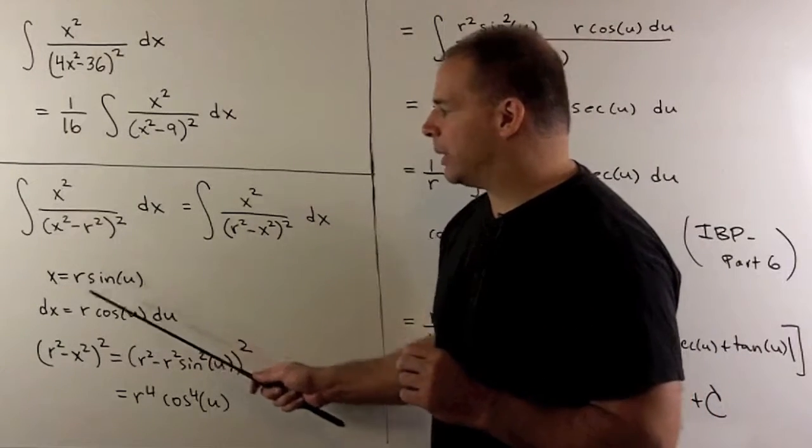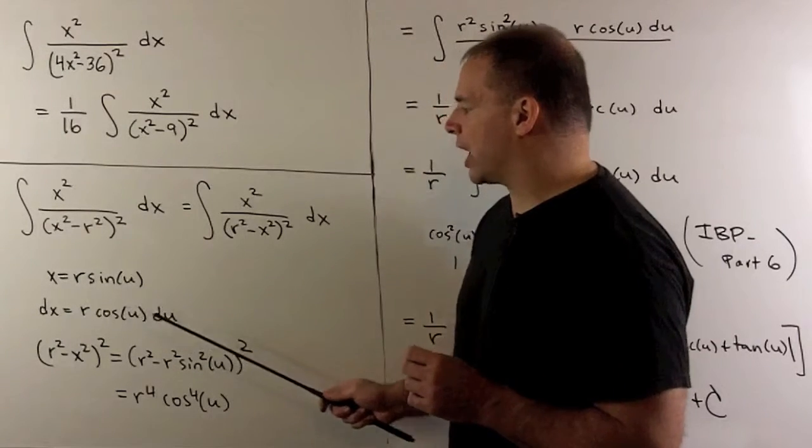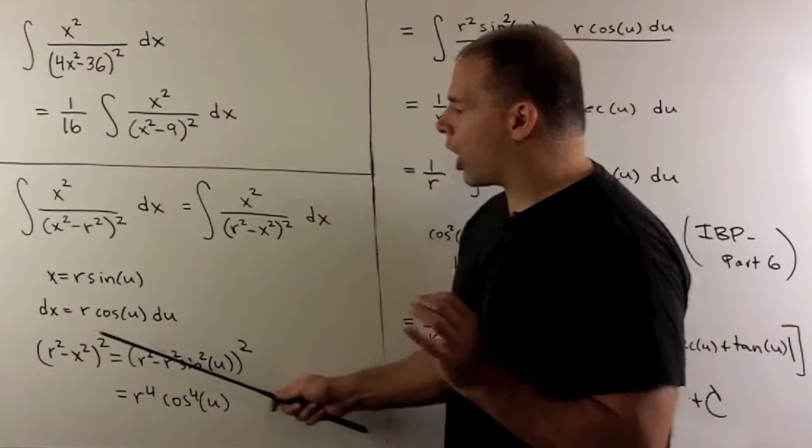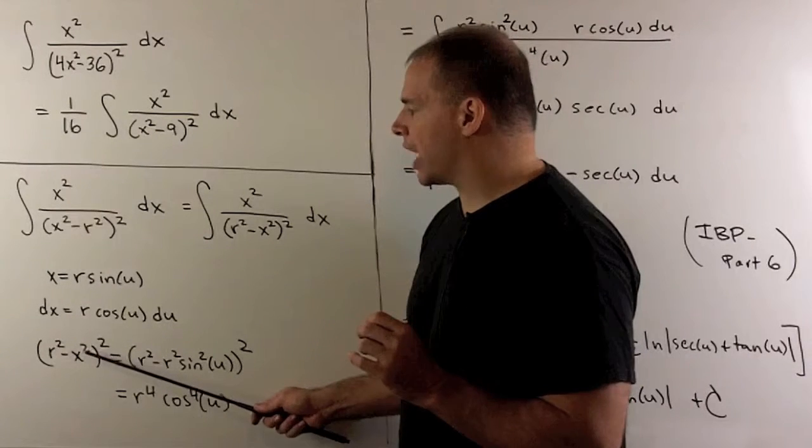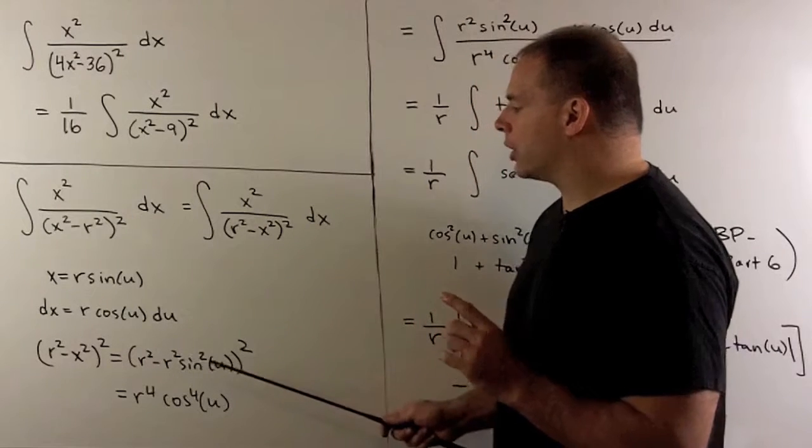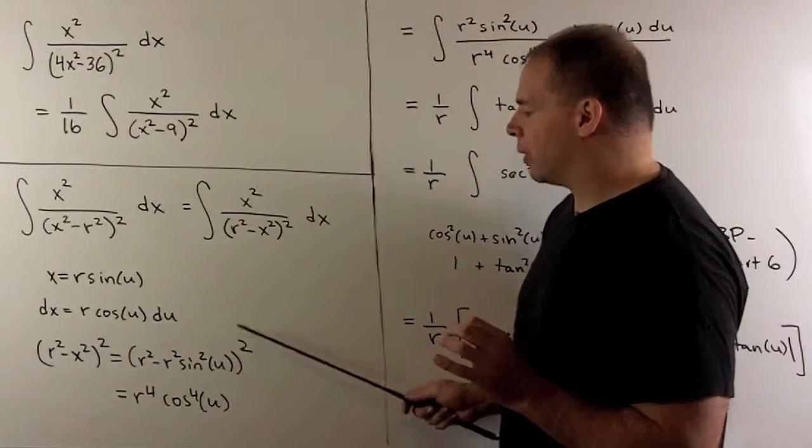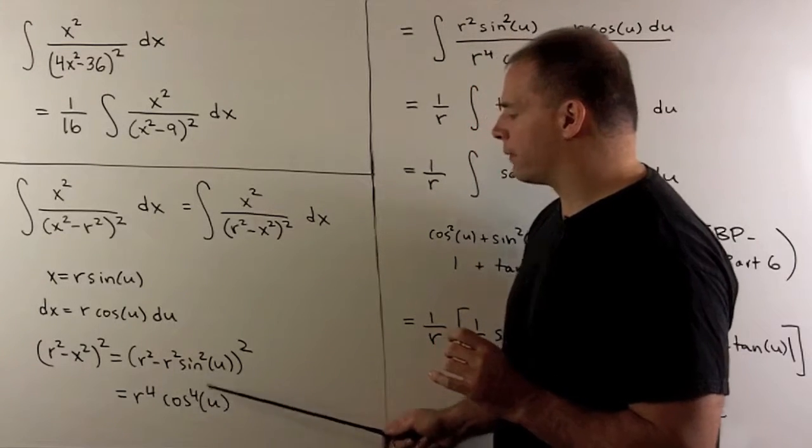So, I'm going to let x be equal to r sine of u, then dx is equal to r cosine u du. Our (r squared minus x squared) quantity squared, well, we're going to put in r sine theta for x. So, we're going to wind up with an r squared cosine squared u, and then we square it. So, this term is going to turn into r to the fourth, cosine to the fourth u.